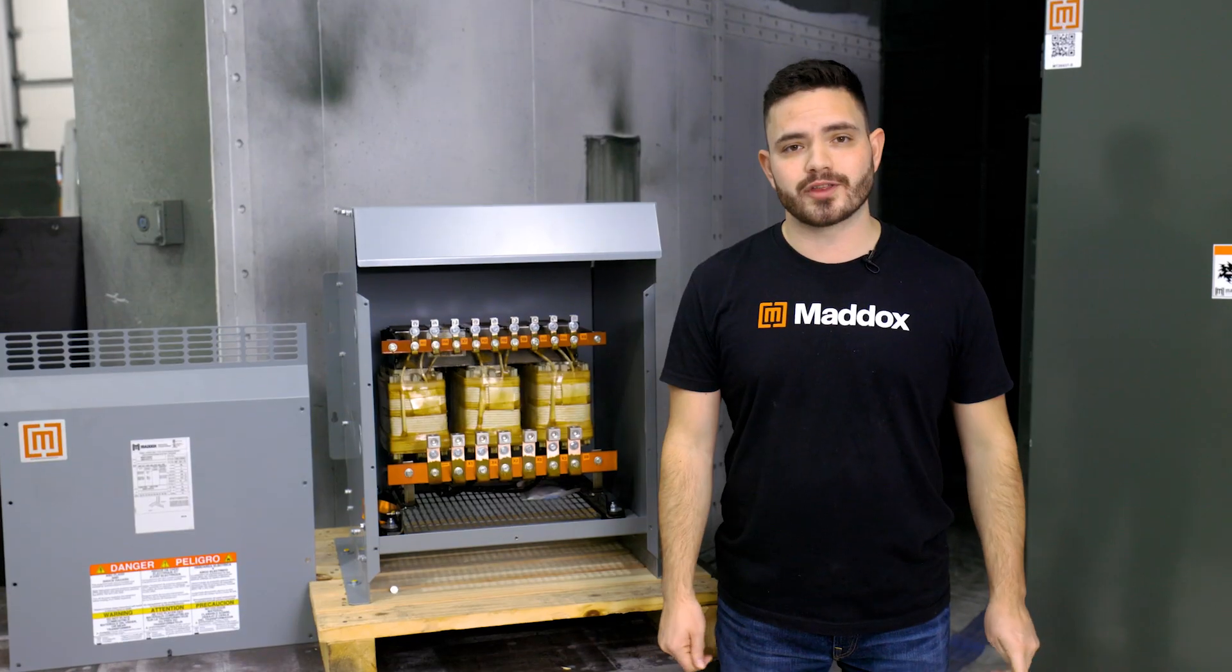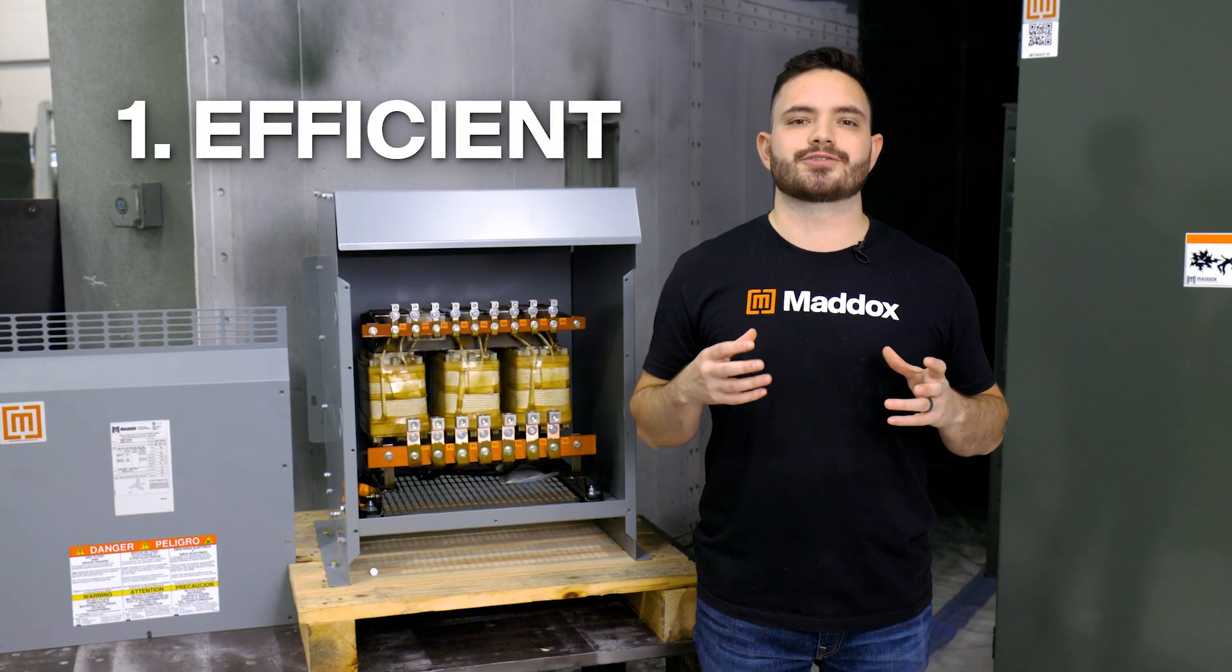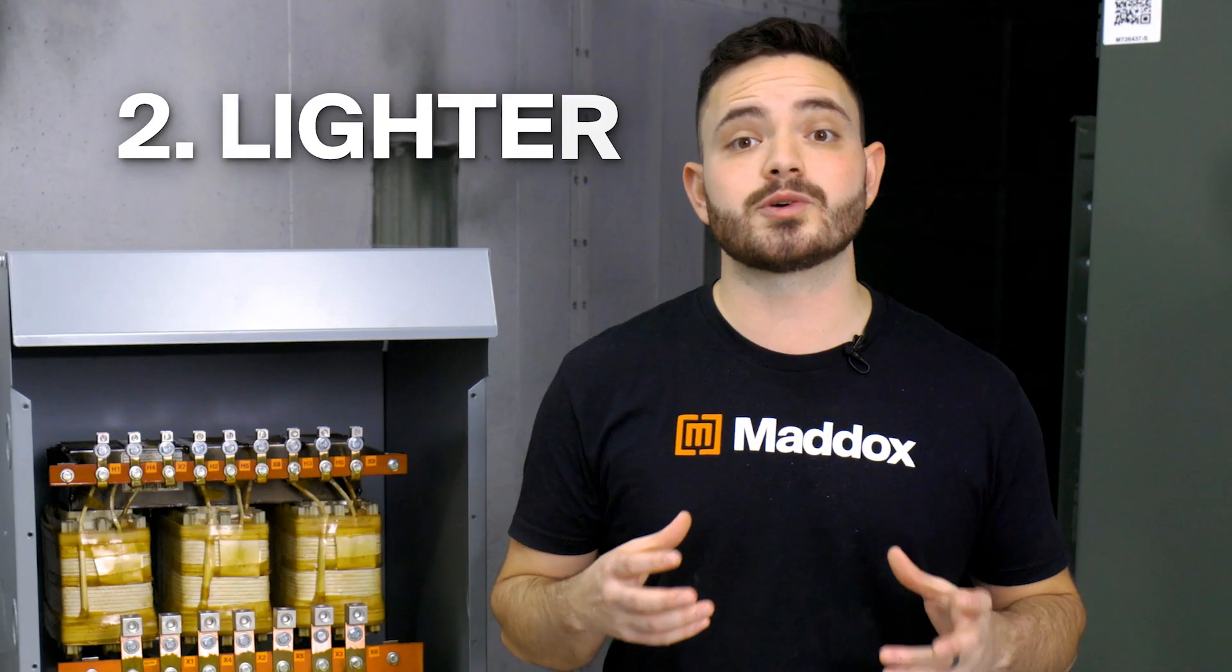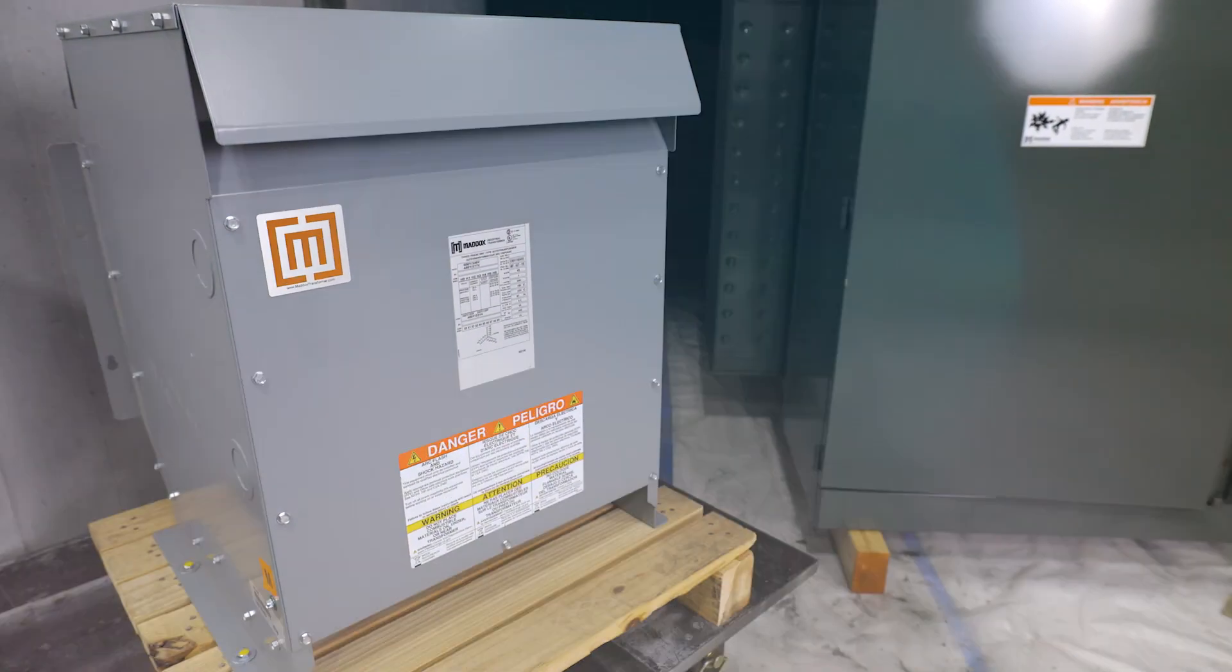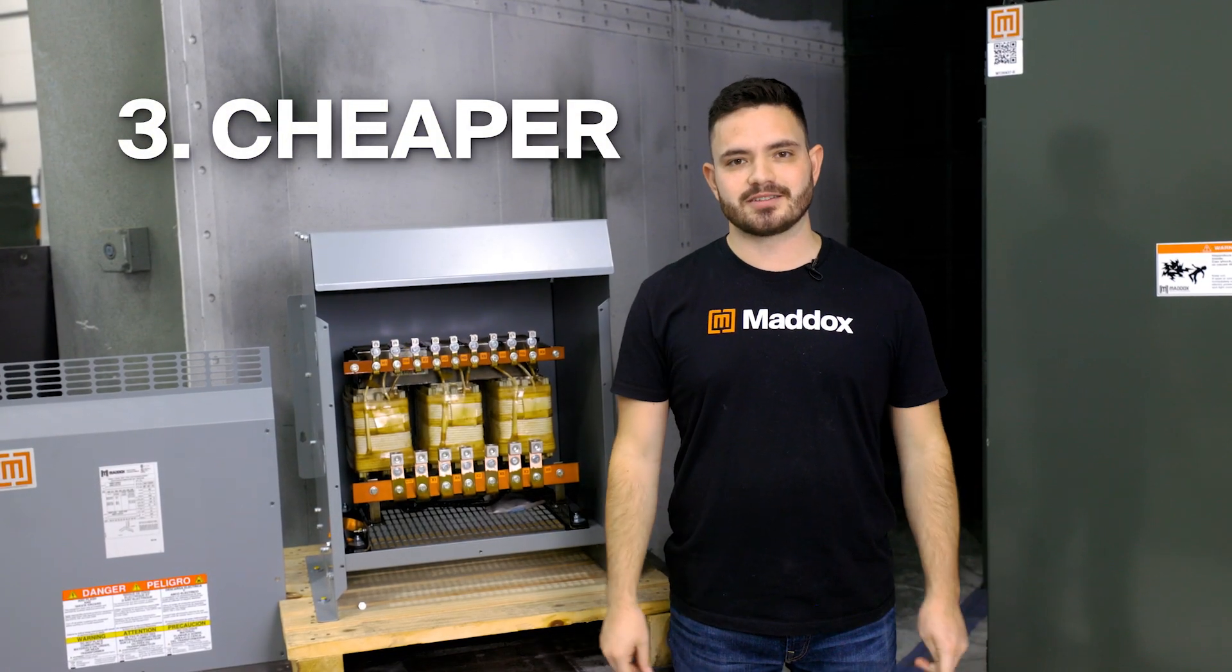Now auto transformers have a few massive advantages over their isolating counterparts. Because of the direct connection between the primary and secondary, auto transformers are extremely efficient. They're also lighter and more compact. And because they use less material, they're much cheaper than traditional isolation transformers.